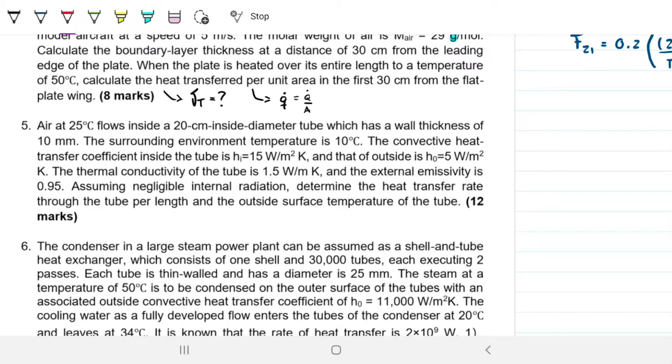Problem statement reads: air at 25 degrees Celsius flows inside a 20 centimeter inside diameter tube, which has a wall thickness of 10 mils. The surrounding environment temperature is 10 degrees Celsius. The convective heat transfer coefficient inside the tube is 15, and that outside is 5.